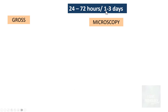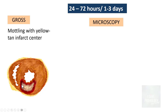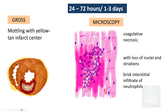From one to three days, grossly you find mottling with a yellowish tan center at the infarct core. Microscopically, there is very well-formed coagulative necrosis with loss of nuclei, and the interstitium is overwhelmed with large numbers of neutrophils. This stage is very important — even at this stage, if there is no intervention, there is a risk of pericarditis.